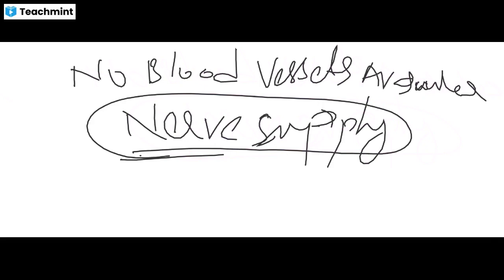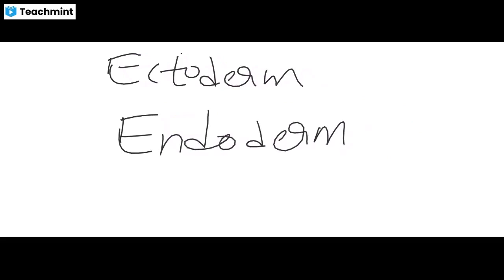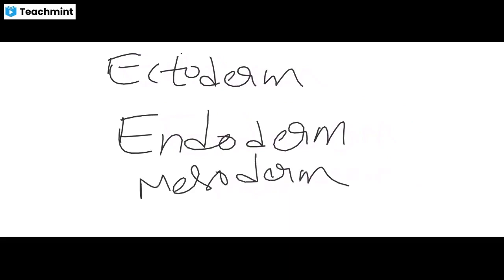Epithelial tissues are originated either from ectoderm, endoderm, or mesoderm. Blood vessels that bring in nutrients and remove wastes are located in the adjacent connective tissue, not in the epithelial tissue itself.